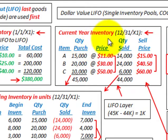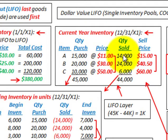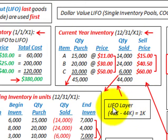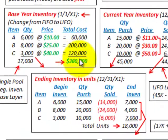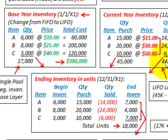For the current year, we have quantities purchased for items A, B, and C at specific purchase prices, and a quantity sold at specific selling prices. For our example, we purchased 45,000 units during the year but only sold 44,000 units, so we have a LIFO layer. The 45,000 purchased less 44,000 sold gives us 1,000 units remaining in ending inventory, in addition to our beginning inventory of $380,000.